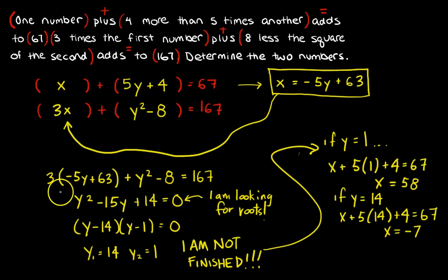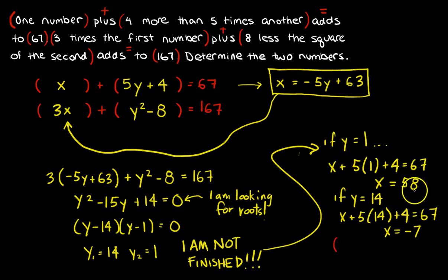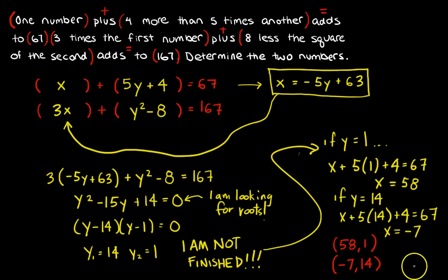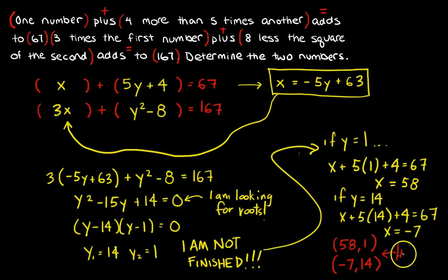At the very end, I have to write my answers as two numbers that go together. So: X = 58 with Y = 1. But the other answer is X = −7 with Y = 14. These are the two different sets of two numbers. That's my answer — hooray, that's that one.